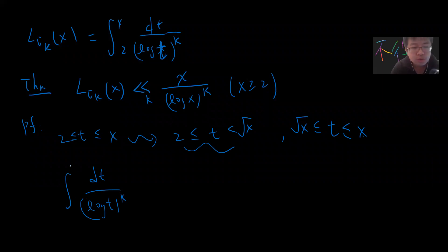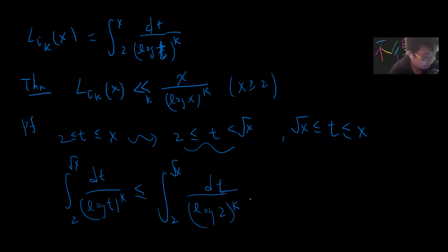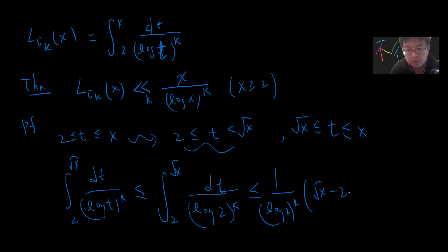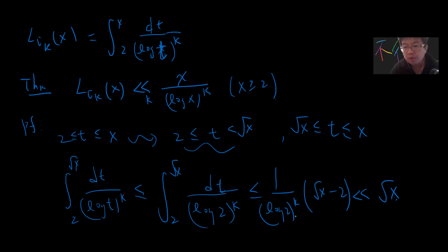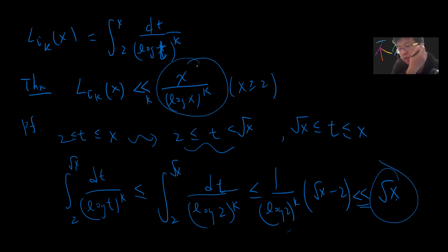For the first region, integrating from 2 to √x, the term 1/log(t)^k is bounded by 1/log(2)^k. So the integral is bounded by (1/log(2)^k)·(√x − 2), which is O(√x). This √x is definitely bounded by x/log(x)^k, so the first region is handled.